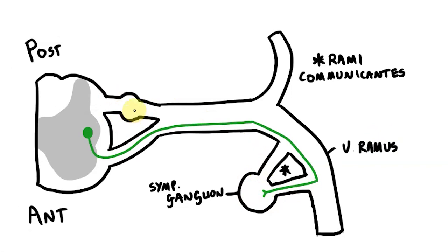Instead of stopping for a coffee, our first efferent fibre is going to synapse with a second efferent fibre. The second efferent fibres start as cell bodies here, then send fibres back to the ventral ramus via the other ramus communicants. These then travel out into the body as normal.